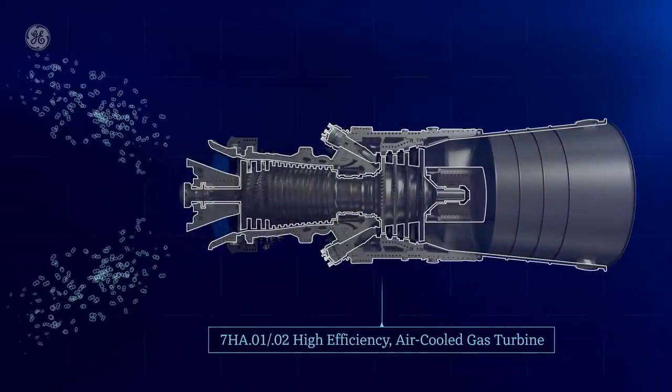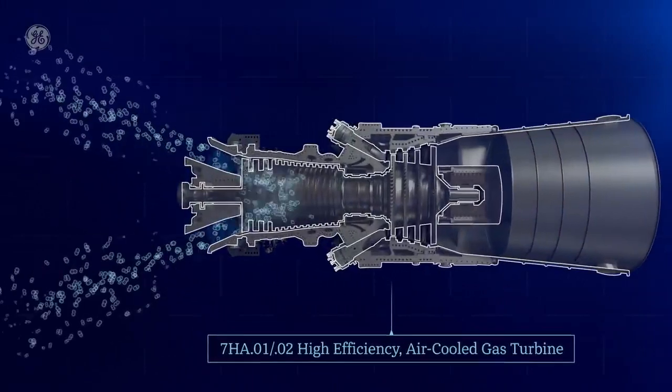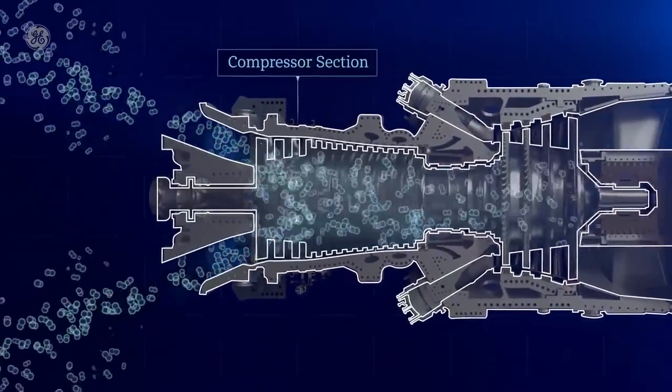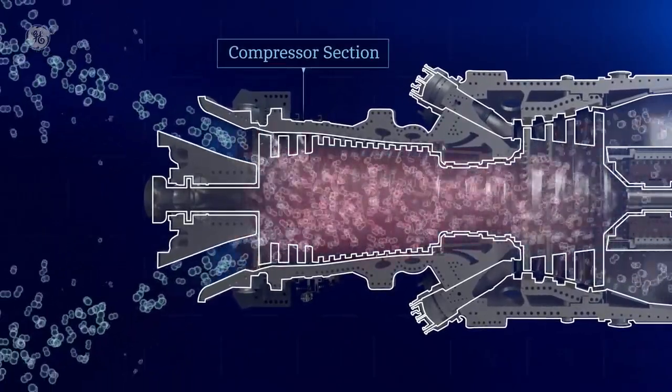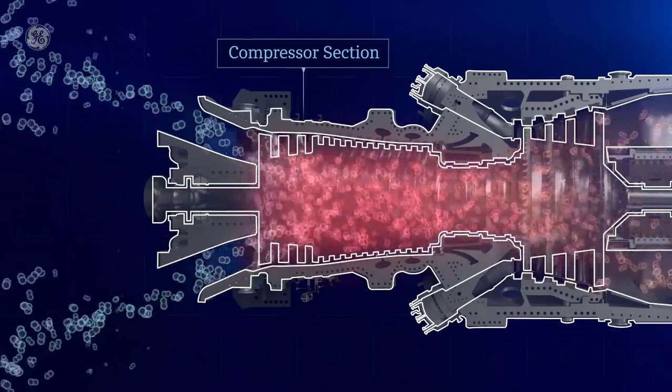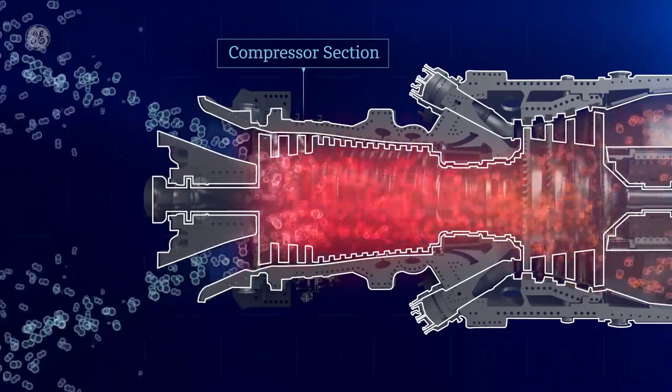First, air is drawn in through one end of the turbine. In the compressor section of the turbine, all those air molecules are squeezed together, similar to a bicycle pump squeezing air into a tire. As the air is squeezed, it gets hotter and the pressure increases.